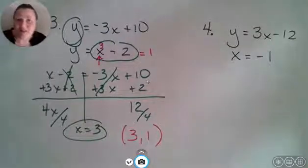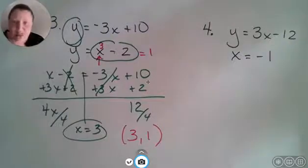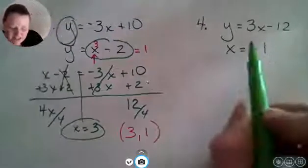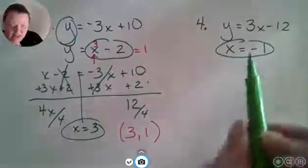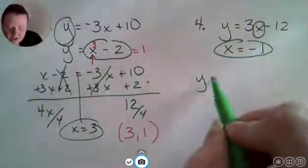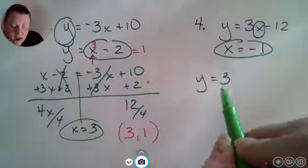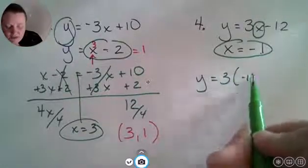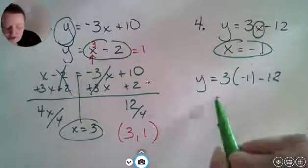One last problem, and again I picked an easy one to end with because look—you already know what x is. So you can substitute this x right there. We're going to go ahead and work it out: I have y is equal to 3 times negative 1 take away 12.